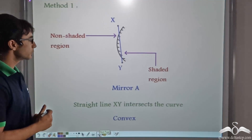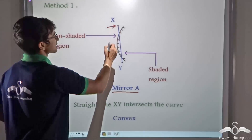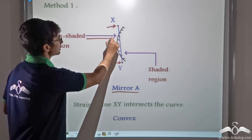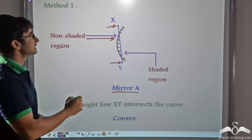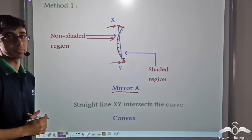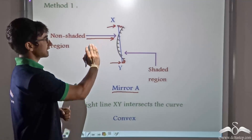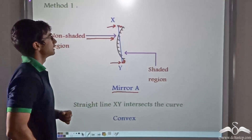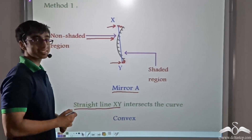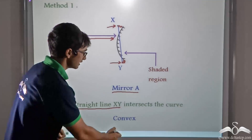Here we learn about the first method. We take mirror A and consider two points close to it, point X and point Y. These two points are chosen in such a way that they lie on the non-shaded or reflecting surface of the mirror, and they should be taken very close to the mirror — not very far away. After taking these two points, join them. We find that we get a straight line XY that intersects the curved surface of the mirror. Because it intersects the curved surface, we conclude that mirror A is a convex mirror.